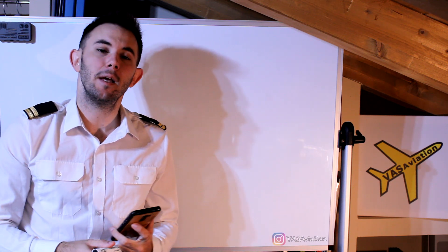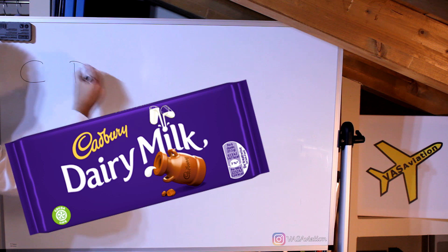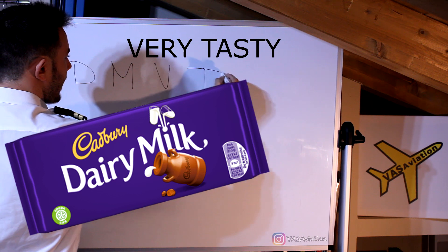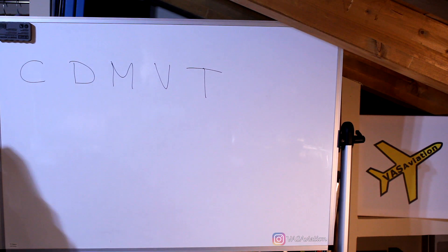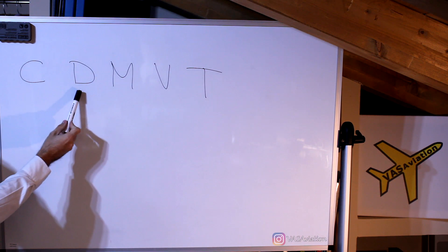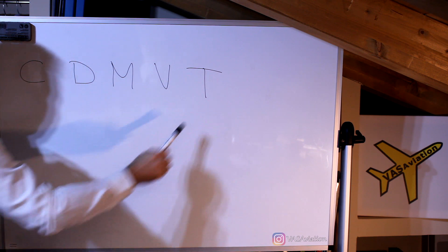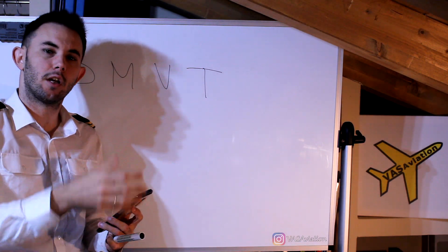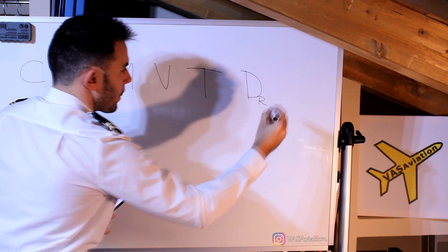The Cadbury's mnemonic has been with us for years and it's very effective. It stands for: Cadbury's Dairy Milk Very Tasty — that is Compass, Deviation, Magnetic, Variation, and True. For this exercise we're going to add two more columns: Drift and True Track.